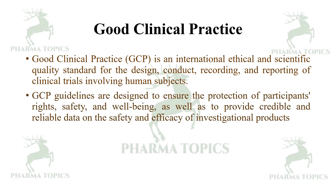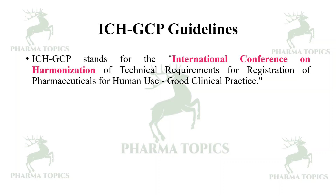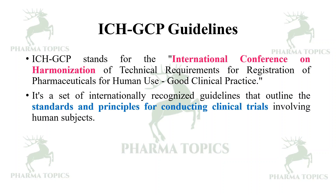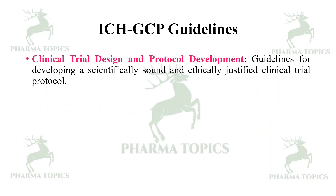Let us see the components of ICH GCP guidelines. ICH GCP stands for International Conference on Harmonization of Technical Requirements for the Registration of Pharmaceuticals for Human Use and Good Clinical Practice. It is a set of internationally recognized guidelines that outline the standards and principles for conducting clinical trials involving human subjects. These guidelines are intended to ensure the ethical conduct, safety, and reliability of clinical trials and the data generated from them. The first area covered is clinical trial design and protocol development.